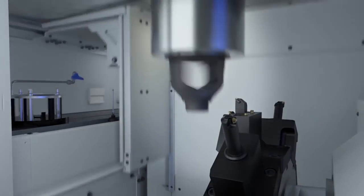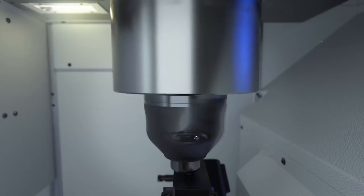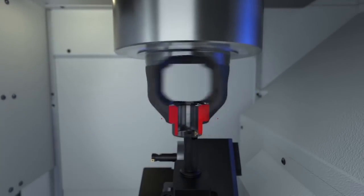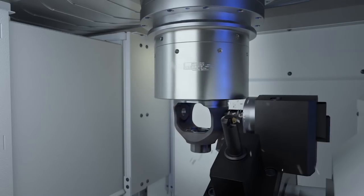The differential housing is first machined on two VL4 turning machines. This is where the internal and external machining of the axle mount and flange is performed. Furthermore, the driven tool turret with 12 tool posts enables the drilling of the holes.